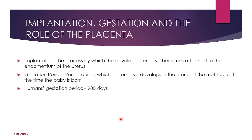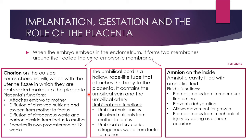Implantation is the process by which the developing embryo becomes attached to the endometrium of the uterus. Gestation is the period during which the embryo develops in the uterus up to the time the baby is born — essentially pregnancy. The human gestation period is about 280 days. When the embryo embeds in the endometrium, it forms two membranes: the chorion on the outside forms chorionic villi, which embed into the uterine tissue to make up the placenta; and the amnion on the inside.